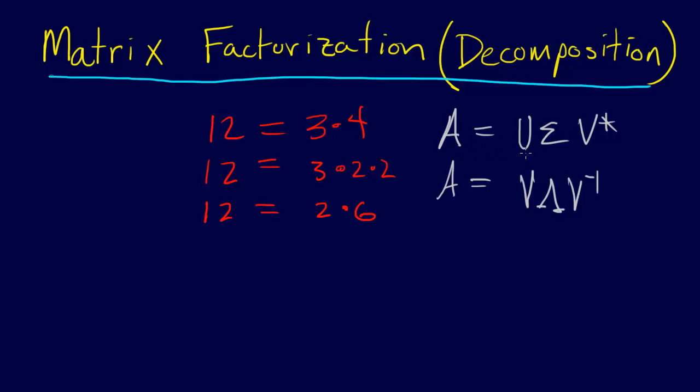So for example, this first one, A equals U sigma V star. This is actually the singular value decomposition of A. And we don't need to get into what that is, but this is a special decomposition of A that's useful in solving problems. Another useful decomposition is the eigenvalue decomposition, where we have V lambda V inverse. And that's another decomposition of A. Another possible decomposition of A is this LU decomposition.